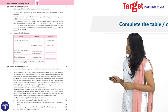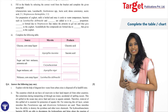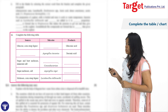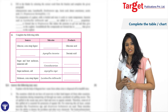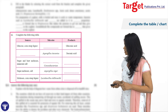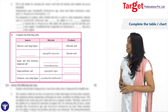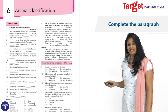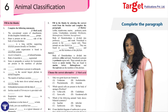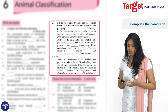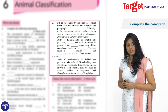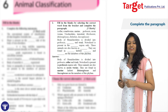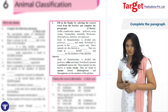Another new type is complete the table or chart, where a chart with blanks is given which you need to fill with appropriate answers. Additionally, complete the paragraph is a new question type where a paragraph from your textbook is given in the examination with blanks — this paragraph could fetch you 3 marks.